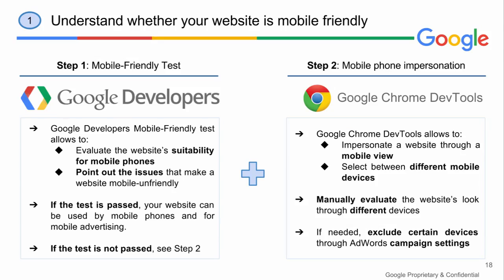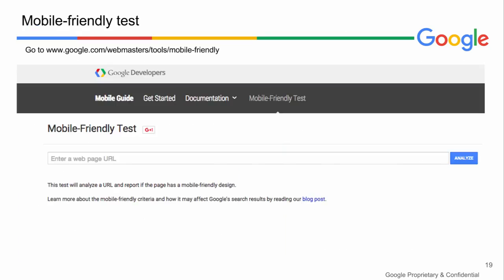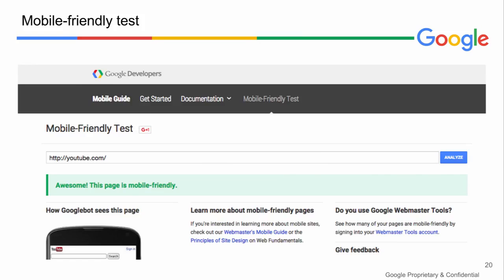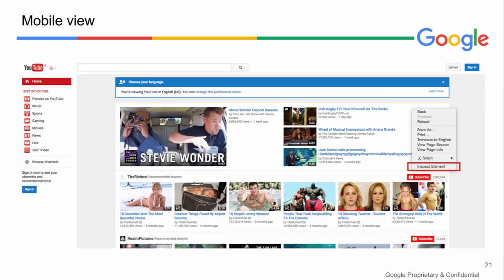First of all, you need to make sure your site is mobile-friendly. You can test your website with the Google Webmaster tool, which helps evaluate if the website is suitable for mobile phones and points out issues that make it mobile-unfriendly. If the test is not passed, analyze your website by impersonating it through a mobile view: go to your site, right-click and choose 'Inspect Element,' then click on the mobile icon in the upper page corner where you can choose different devices and see how your site looks on mobile. If needed, exclude certain devices through AdWords campaign settings.